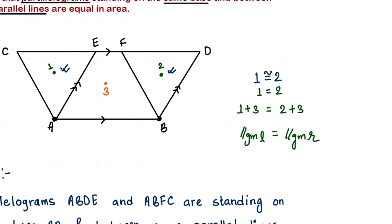Let's see how the AAS axiom matches these two triangles. This is our pattern — these two lines are also parallel. To prove congruence by AAS, we need to find one angle, another angle, and one side equal between the two triangles. So let's first find one angle.